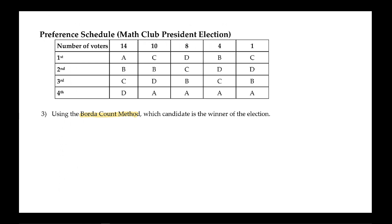The first step with the Borda count method is to assign each place a value. Since there are four candidates and four places, a first place vote is worth the most points — four points. A second place vote gives three points, a third place vote gives two points, and a fourth place vote gives one point.